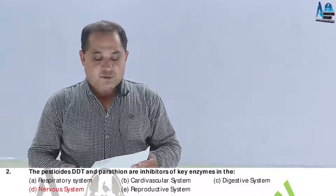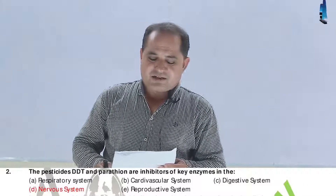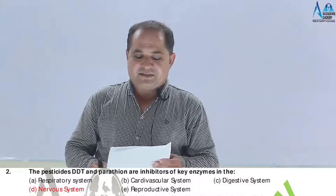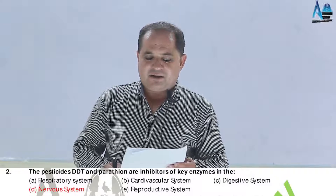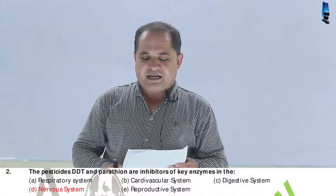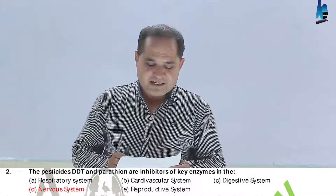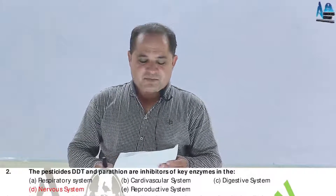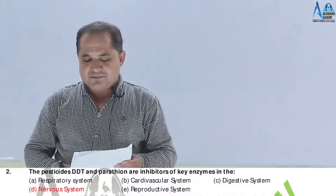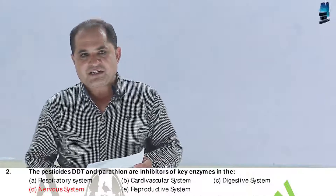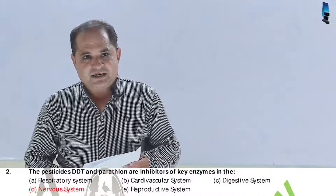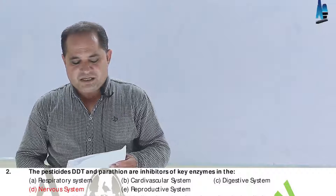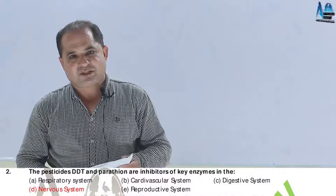Question number 2. The pesticides DDT and parathion are inhibitors of key enzymes in: Option A, the respiratory system; B, cardiovascular system; C, digestive system; D, nervous system; E, reproductive system.